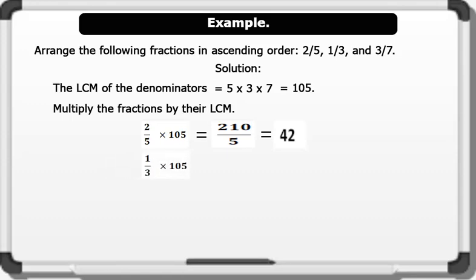1/3 times 105 gives us 105 divided by 3 equals 35. 3/7 times 105 gives us 315 divided by 7 equals 45.